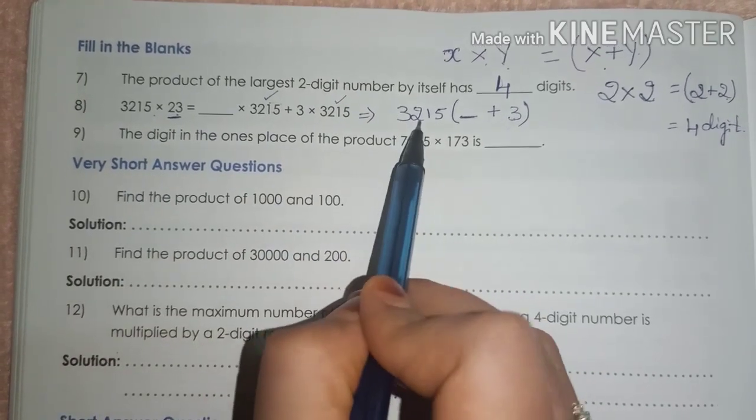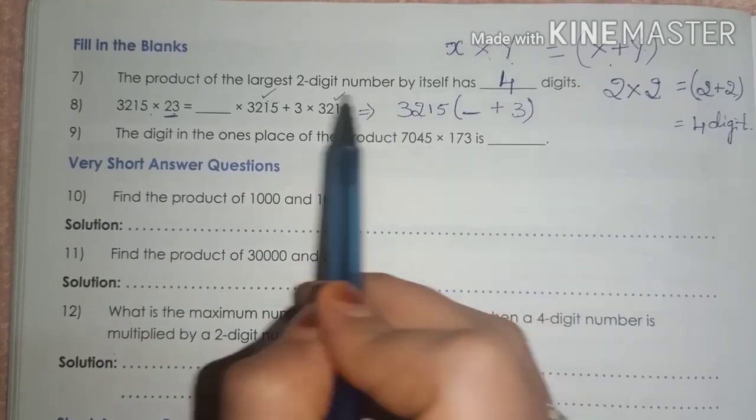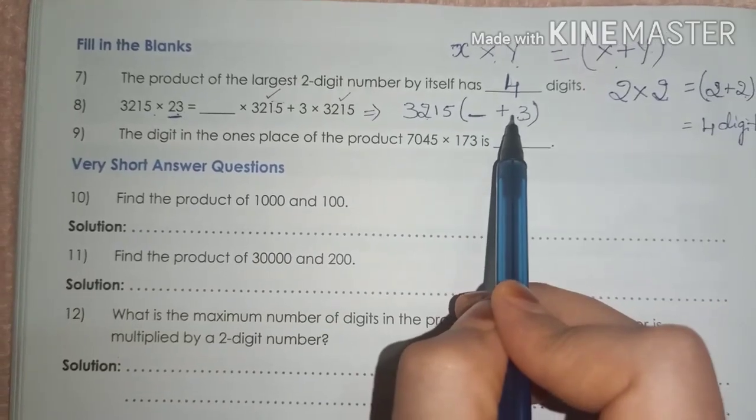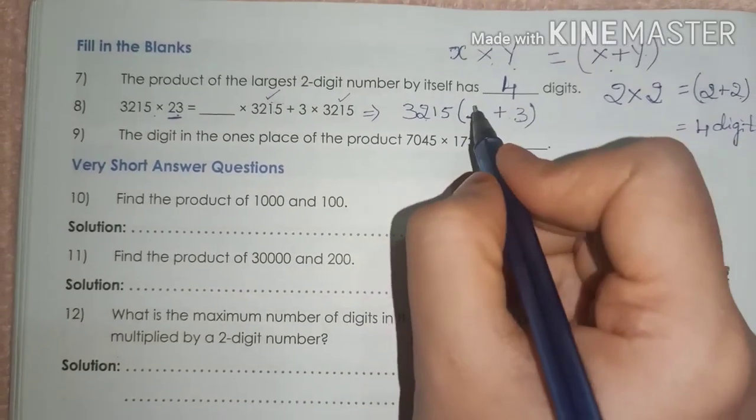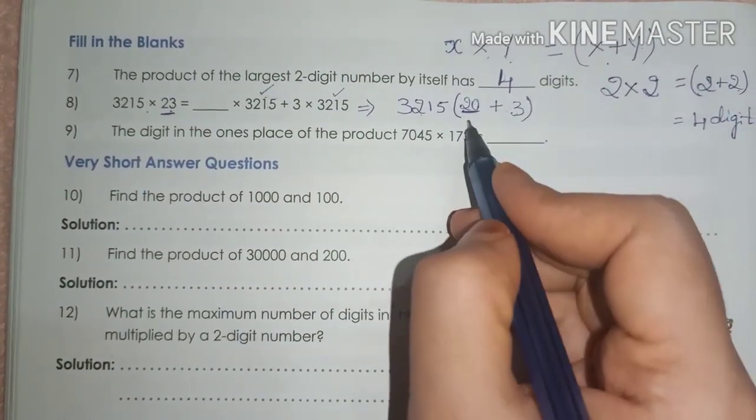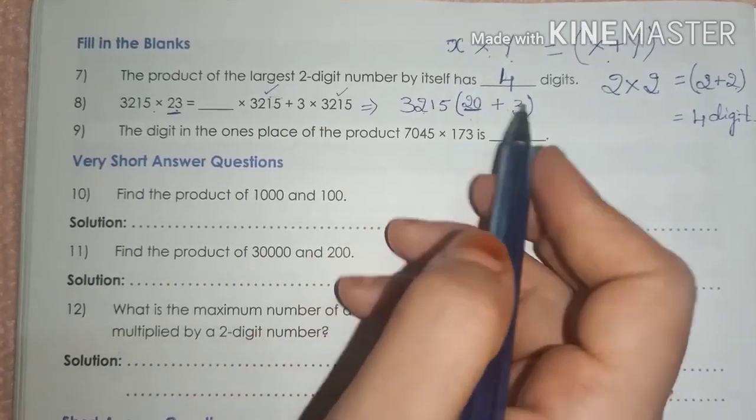3,215 is here. Here also, 3,215 is here. So, 23 and here is only 3. Then you can add 20. 20 plus 3 becomes 23. So, the right answer is 20.